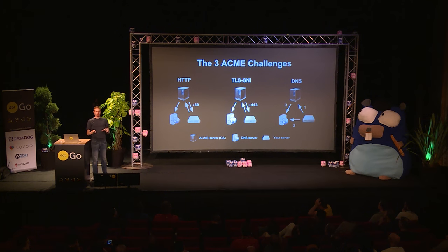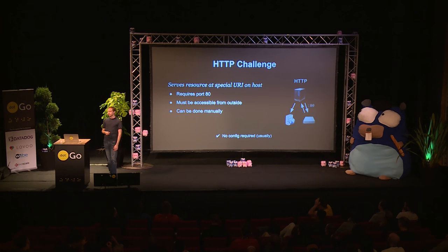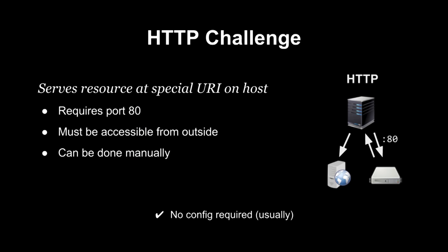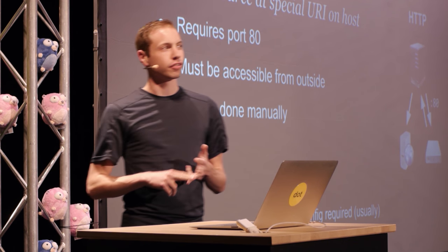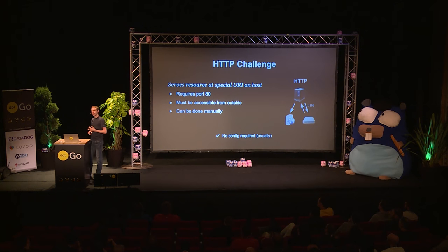You won't need to implement these as a Go programmer, but you should know which ones you can use in which situations. The HTTP challenge is simply a GET request from the ACME certificate authority to your server. If you can serve up a special resource on port 80 at a specific URI, then you prove ownership of the domain and you're granted the certificate. You have to open port 80 and be accessible from the outside, so if you're behind a load balancer, proxy, or firewall, this could be a little tricky.